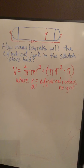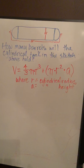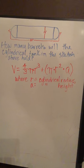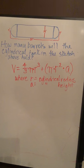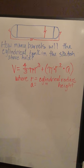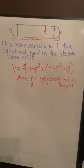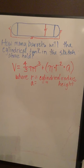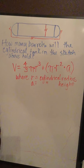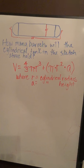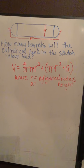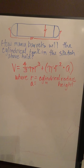We're going to use the formula which is volume equals 4 over 3 times pi times radius cubed plus pi times radius squared times a, where r is your cylindrical radius and a is your cylindrical height.